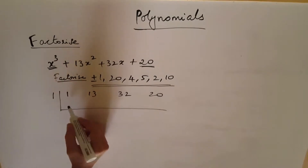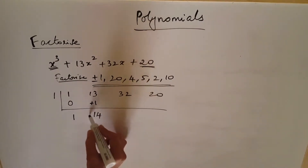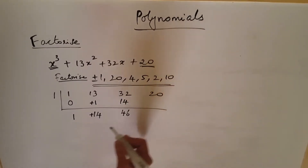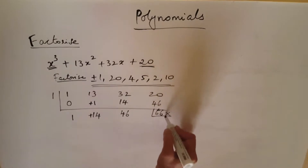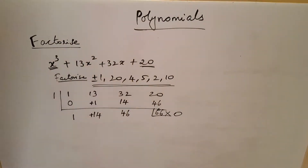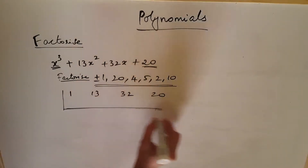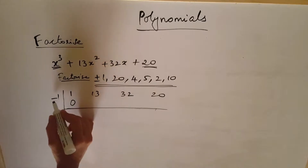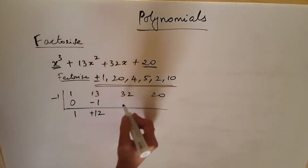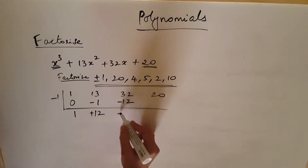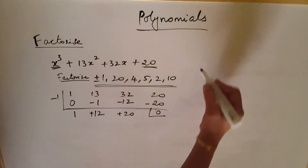Starting with plus 1: coefficients are 1, 13, 32, 20. We get 1, 14, 46, 66 — the remainder is not 0, so we neglect plus 1. Now we try minus 1: minus 1 into 1 gives 12, plus 20, minus 1 into plus 20 gives minus 20, remainder is 0. So x plus 1 is a factor.